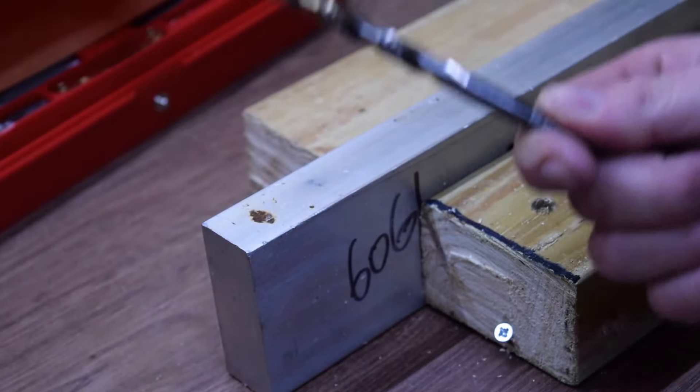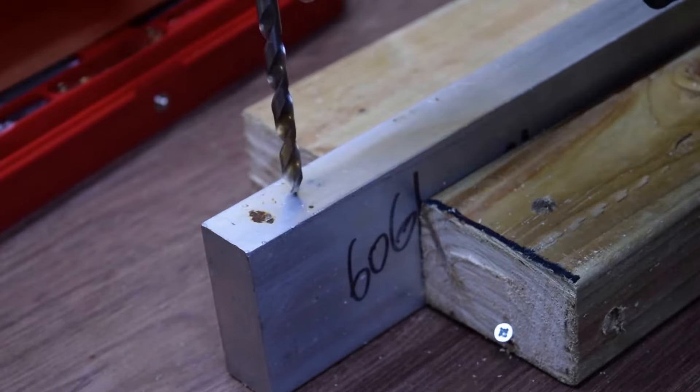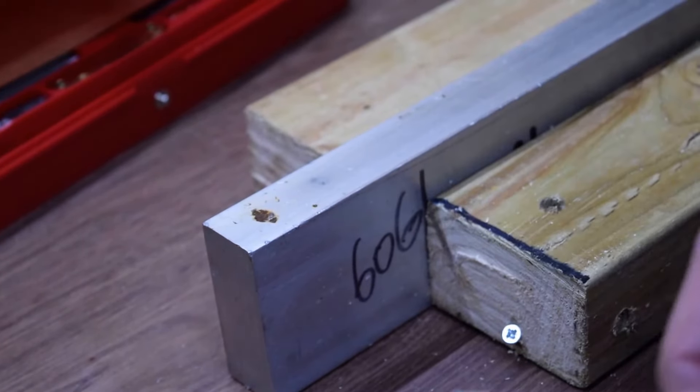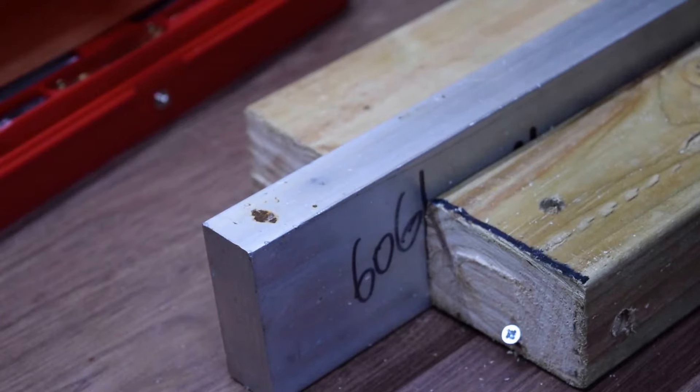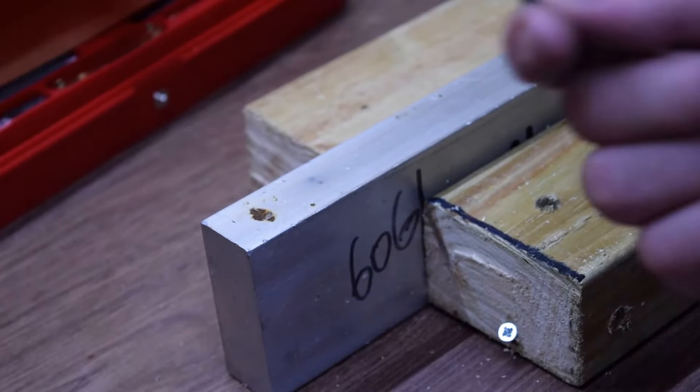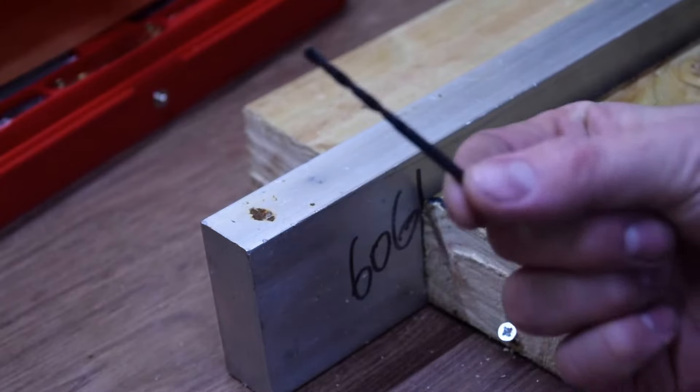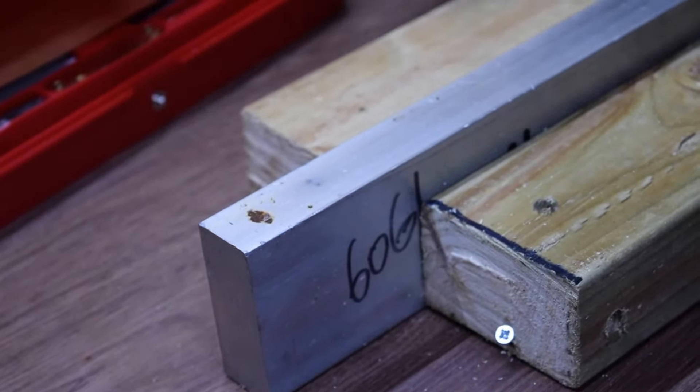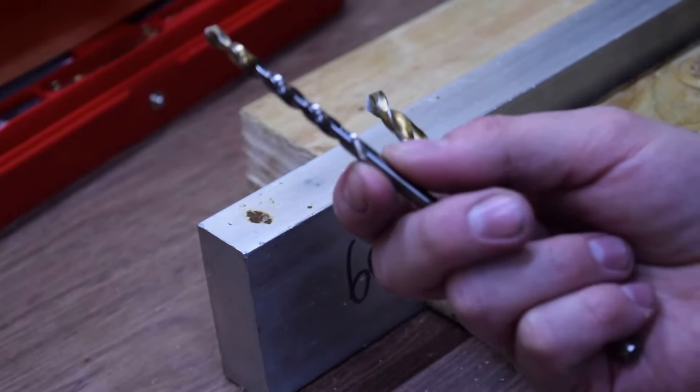So we need to use a 7mm drill bit for our 8mm thread because the tap takes off another mil or so, well 1.25 to be exact. So we're going to pilot it with a 1.8 drill bit, and then because it's 7mm I like to use a 5mm and then go to 7mm. So we're going to be using the 1.8, the 5, the 7mm, and then we'll be able to tap it.